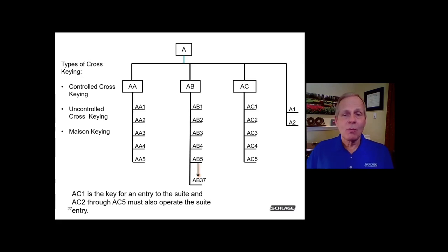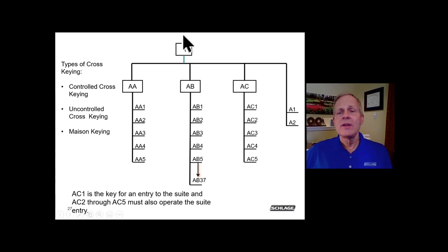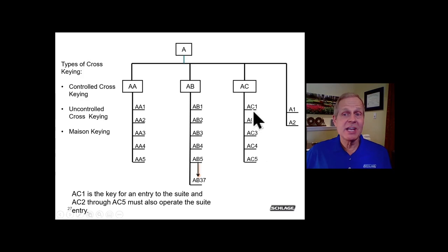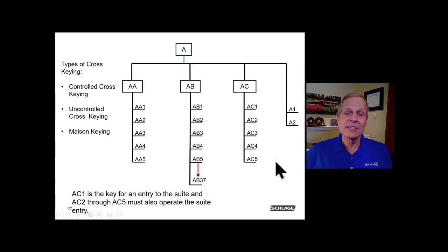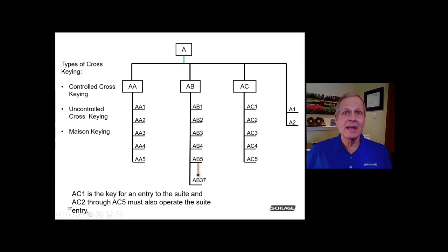Another example: change key AC1 operates an entry suite, and we also want AC2 through AC5 to operate that same suite door. This is controlled cross-keying — or Maison keying — because all these change keys come under the same master, with all of them operating that suite entry door.